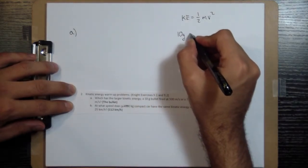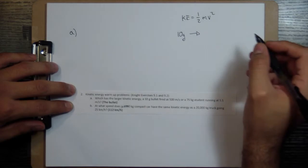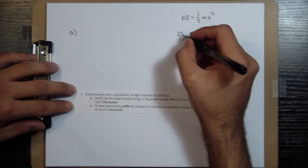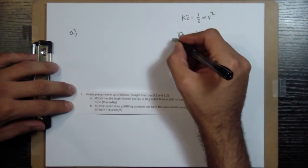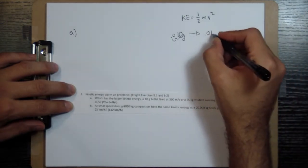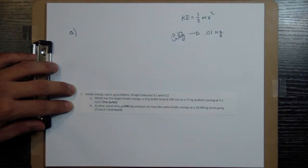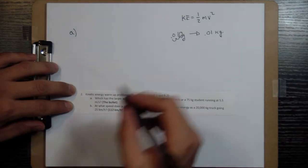So 10 grams, convert it to SI units, we're going to divide by 1,000. So we're going to move over one, two, three decimal places. It'll be 0.01 kilograms for the bullet.